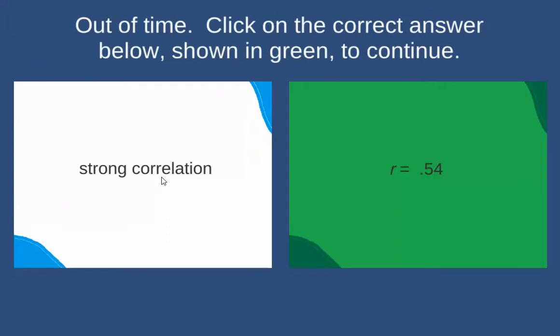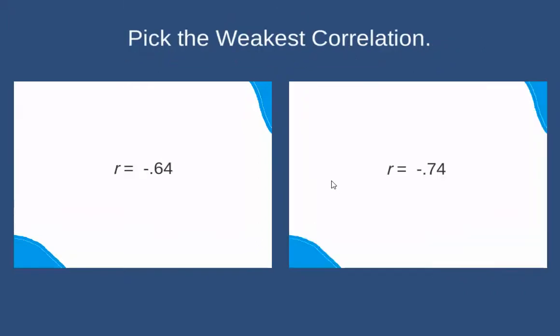A strong correlation is any correlation that's .7 and above or negative .7 and below, both of those being far from zero. A weak correlation would be between zero and .3, as well as between zero and negative .3. The closer you are to zero, the weaker the correlation; the further you are from zero, the stronger the correlation.